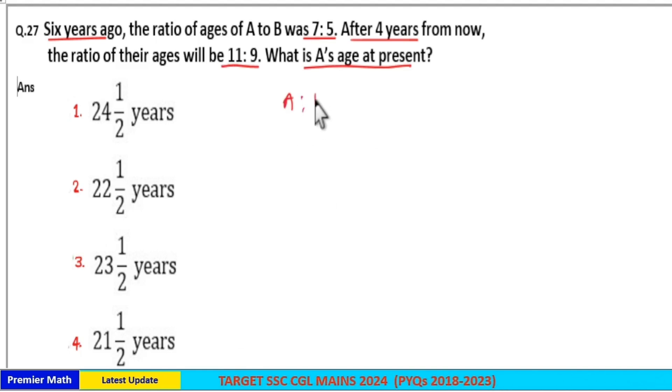Here, 6 years ago, the ratio of ages of A and B was 7 years to 5. And after 4 years from now, that is after 4 years from present, their ages ratio is 11 years to 9.